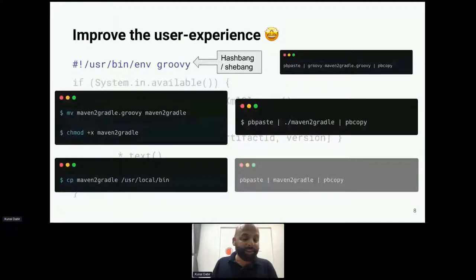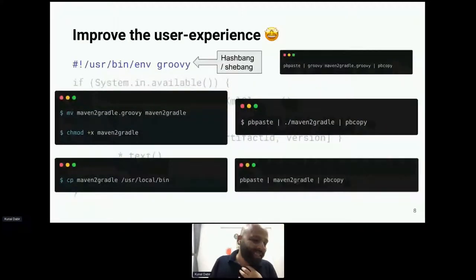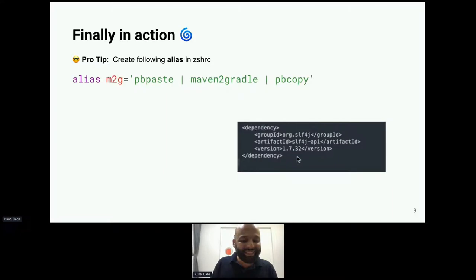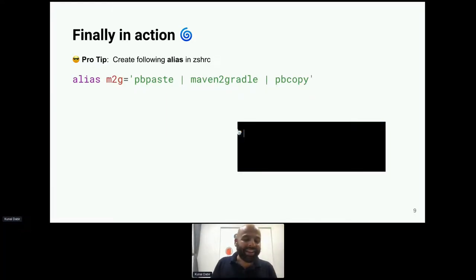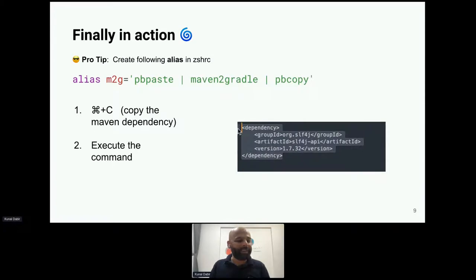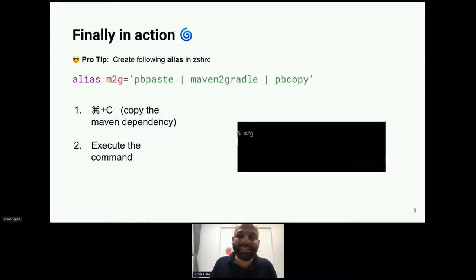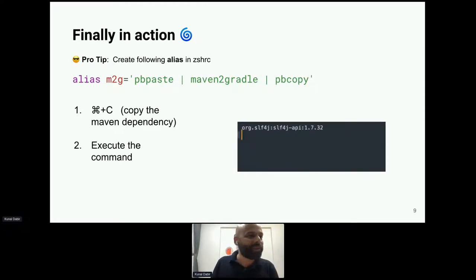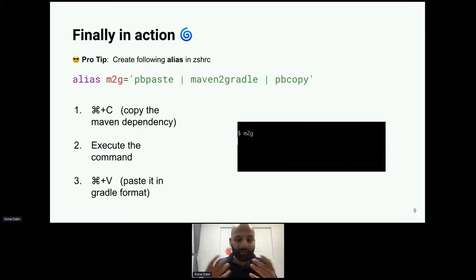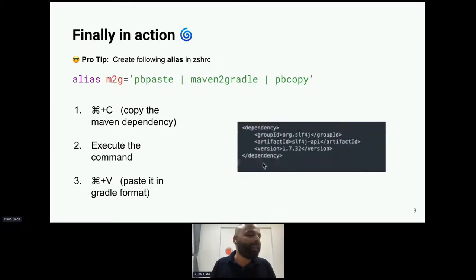Now it's even simpler: `pbpaste | maven_to_gradle | pbcopy`. I take it one step further by creating an alias `m2g` in my `.zshrc` or `.bash_profile` that wraps the full pipeline. Now it's completely DRY — I just copy a dependency with Command+C, type `m2g`, and the converted Gradle dependency is back in my clipboard. This is where Groovy really shines, interplaying so well with existing systems.